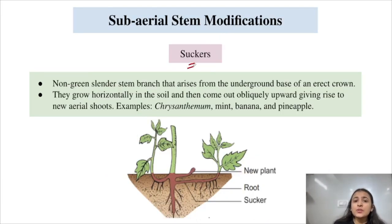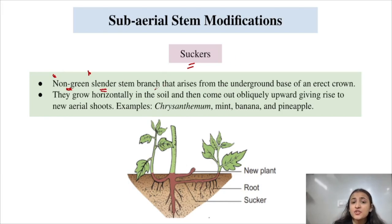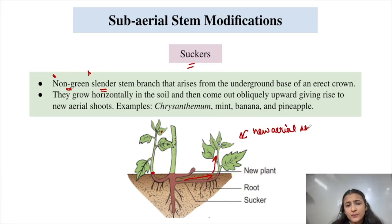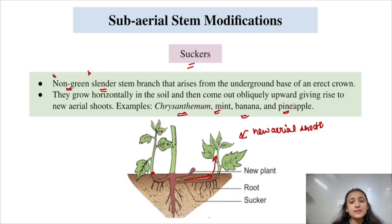Suckers are non-green, slender branches that arise from the underground base of an erect stem. They grow horizontally in the soil and then come out obliquely upwards, giving rise to new aerial shoots. Adventitious roots are also arising from suckers. Examples are seen in chrysanthemum, mint, banana, and pineapple.